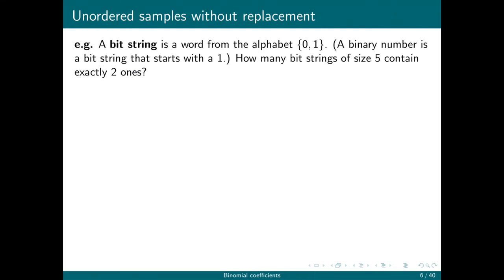Here's an example that is not totally obvious that it's an unordered sample without replacement—you have to be explained how we can think of it that way. A bit string is a word from the alphabet {0, 1}. We talked a little bit about words and alphabets in the last set of videos. What that basically means is a bunch of zeros and ones in some order. For example, 001100 is a bit string of length 6. A binary number is a bit string that starts with a 1—we usually don't write binary numbers starting with zeros. The question is: how many bit strings of length 5 contain exactly 2 ones?